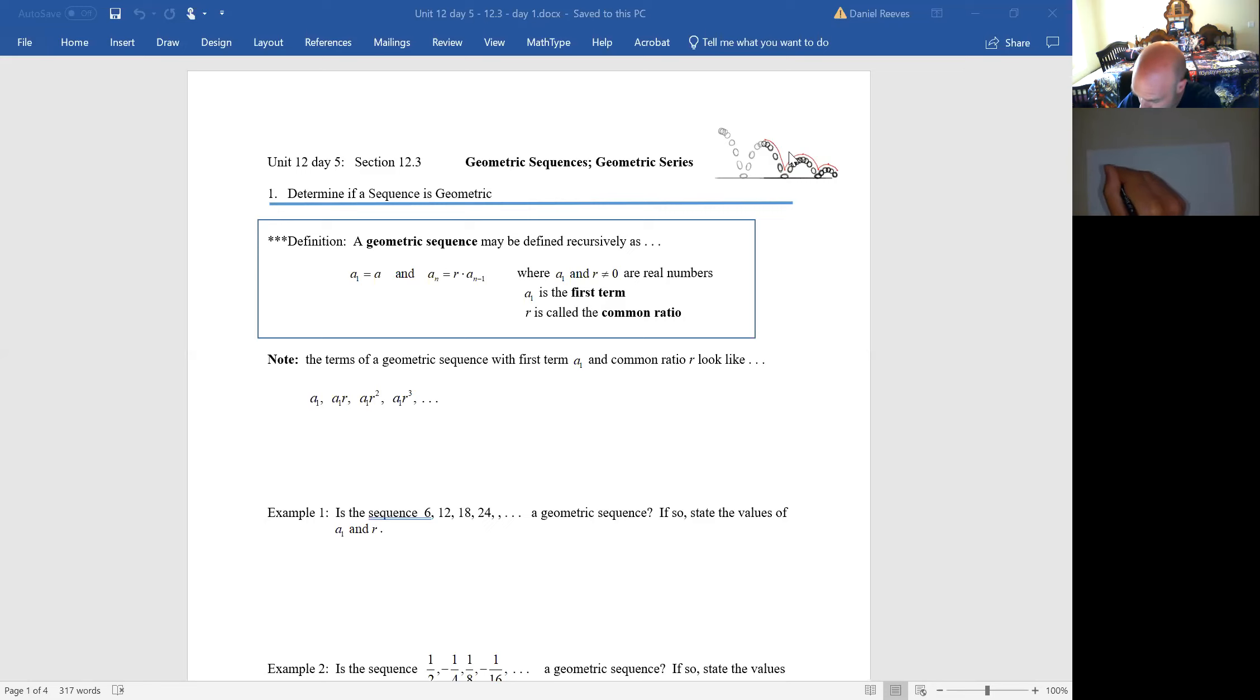If my first term is a sub one, then my second term is going to be a sub one times that ratio, and that is what a sub two would equal. A sub three could equal a sub two times that ratio, or it could just equal a sub one times that ratio, which is a sub two times that ratio again, or a sub one times that ratio squared, and of course a sub one times that ratio cubed is my fourth term. Keep in mind that the exponent of r is always one less than the term number because you didn't have to multiply that first term by anything to get that r.